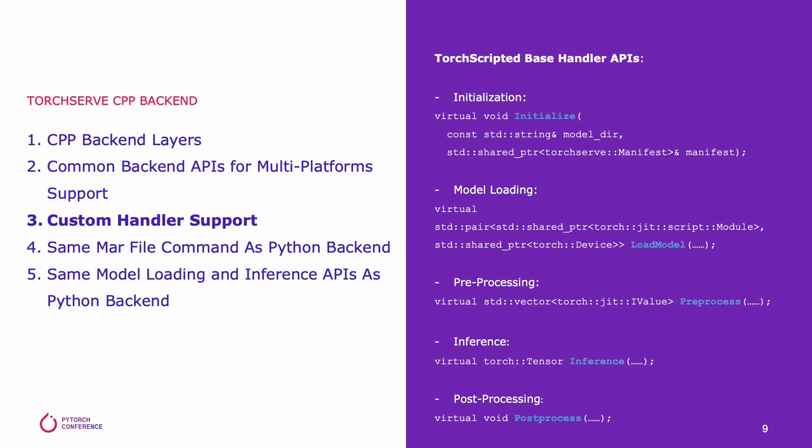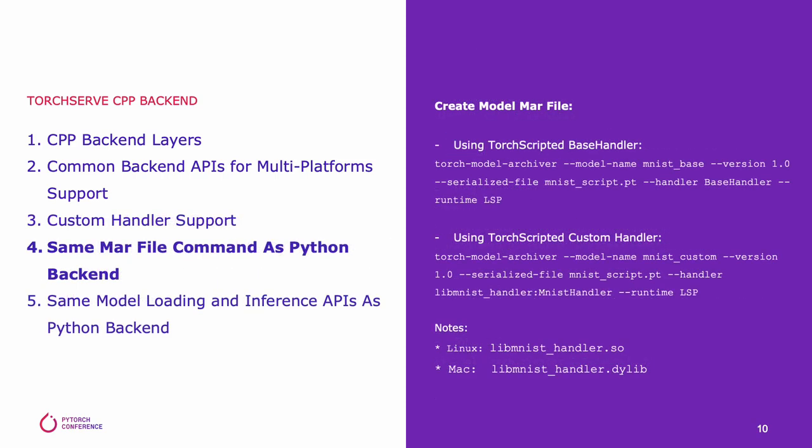TorchScript back-end is the default CPP back-end. As with the Python back-end handler, CPP back-end has a default base handler implementation, but users can override it. Function initialize is used for model initialization. Function load_model is used for model loading. Function pre_post_process is used for model pre- and post-processing. Function inference is used to call the model to run prediction. CPP back-end maintains the same behavior as Python back-end, allowing users to build a model .mar file using the model archival command.